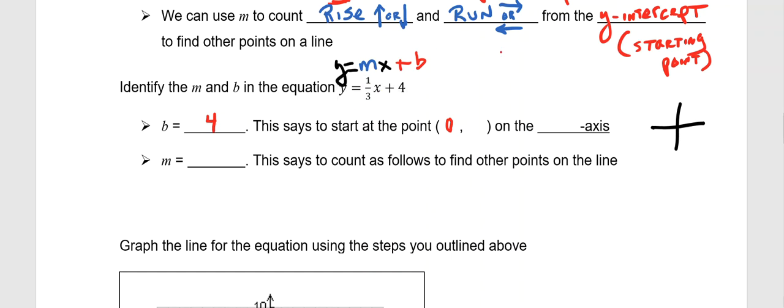But we do move up or down to keep us on the y-axis. So for us to have a b value, a y-intercept, a starting point on the y-axis of four, means that the ordered pair is going to be zero, four. And that's on the y-axis.